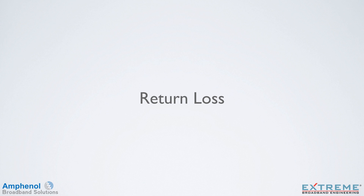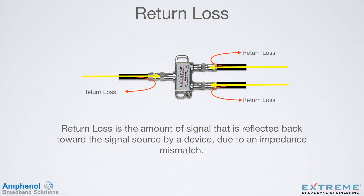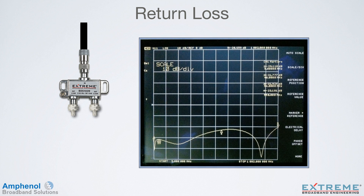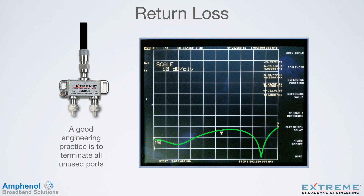Next, we'll look at return loss. Return loss is the amount of signal that is reflected back towards the signal source by a device due to an impedance mismatch. With passive devices, one of the main causes of return loss is unterminated ports. Here we're looking at a network analyzer return loss sweep from 5 to 1,002 MHz of the input port with the output ports terminated. With proper termination, the return loss is at least 20 dB down, and at most frequencies way below that — this is a good return loss sweep for a two-way splitter. By removing the terminator from one of the ports, we see a drastic change for the worse; the return loss is now in the 6 to 8 dB range — worse by at least 12 dB. A good engineering practice is to terminate all unused ports when possible.